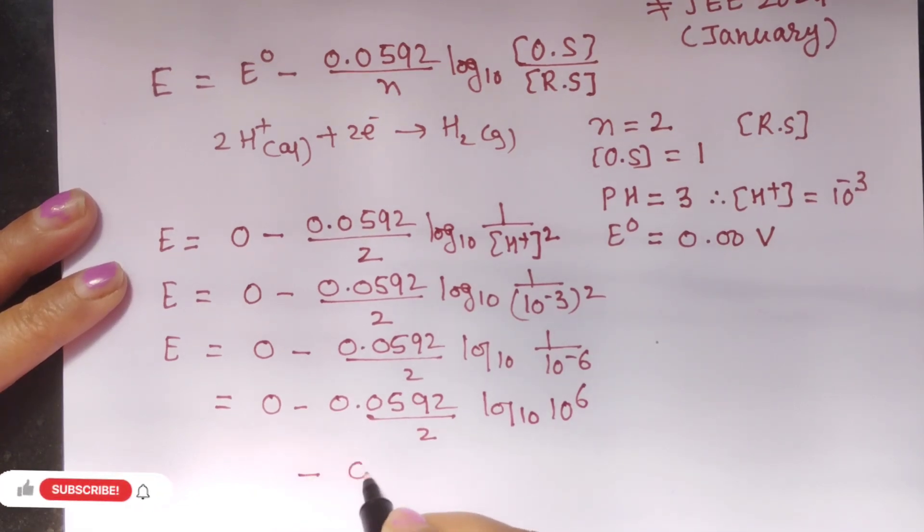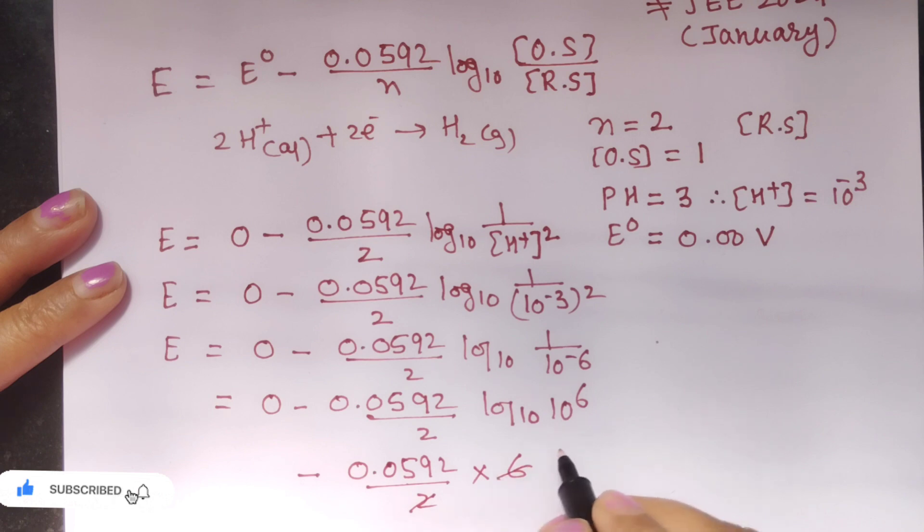Therefore it will be minus 0.0592 by 2 multiplied by 6. So this and this will give me 3. So that is minus 0.0592 into 3 and this comes out to be minus 0.1773 volt.